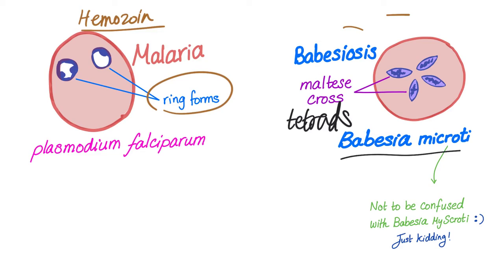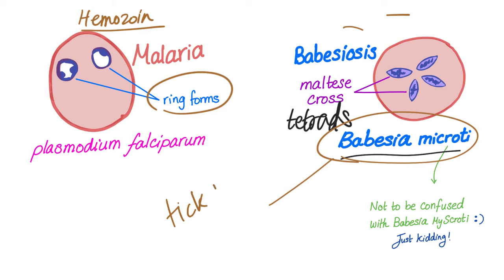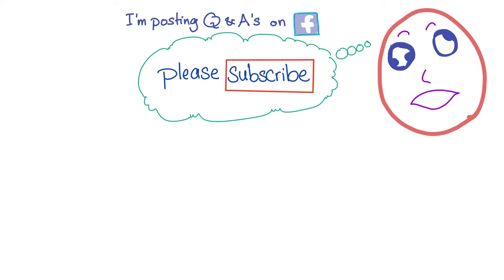Don't forget that babesia can be present with other tick-borne diseases, such as Lyme disease — high yield. Malaria and babesia are red blood cell inclusions because these parasites infect your red blood cells.